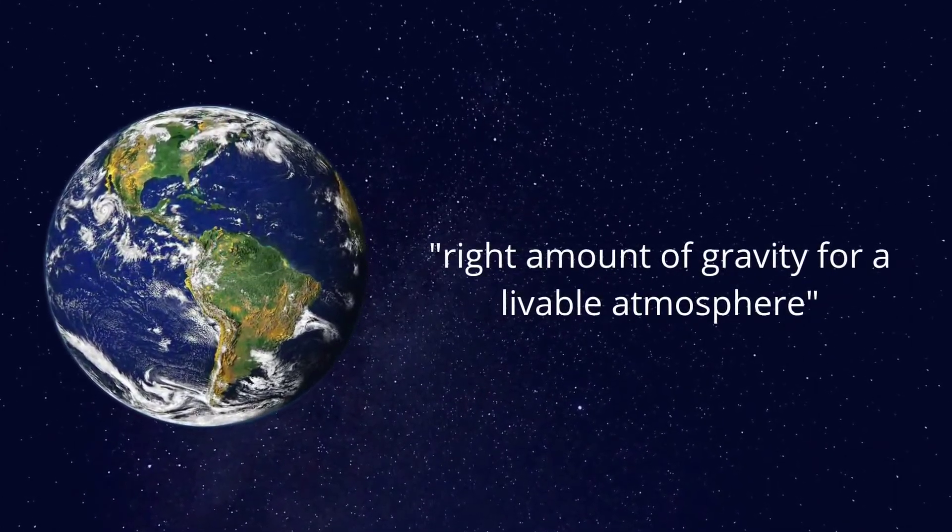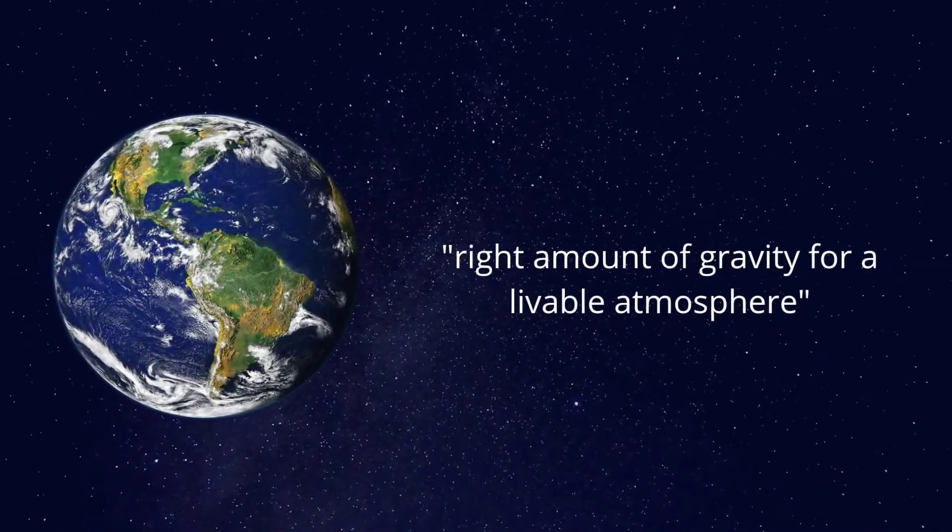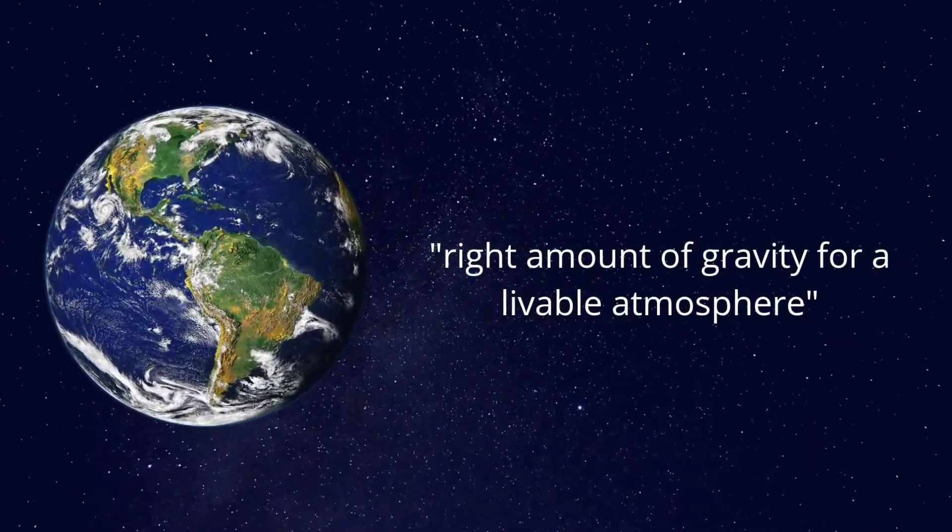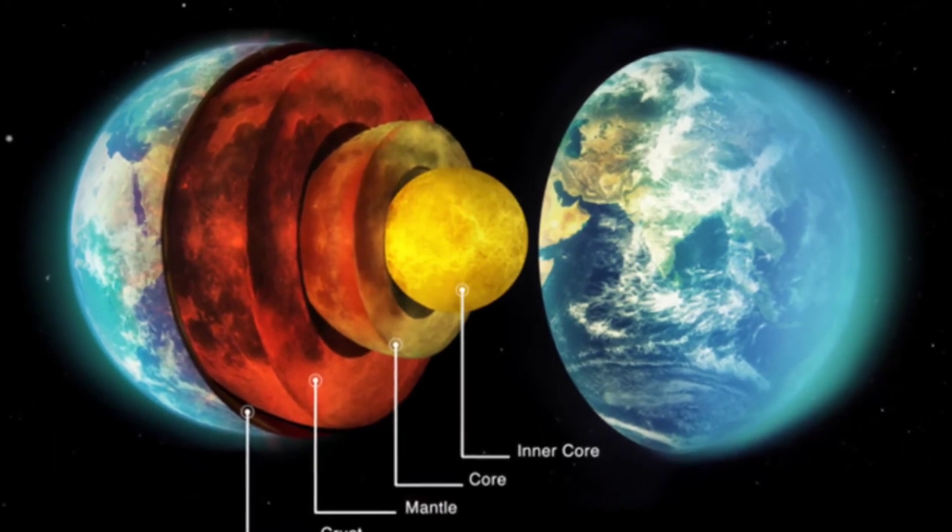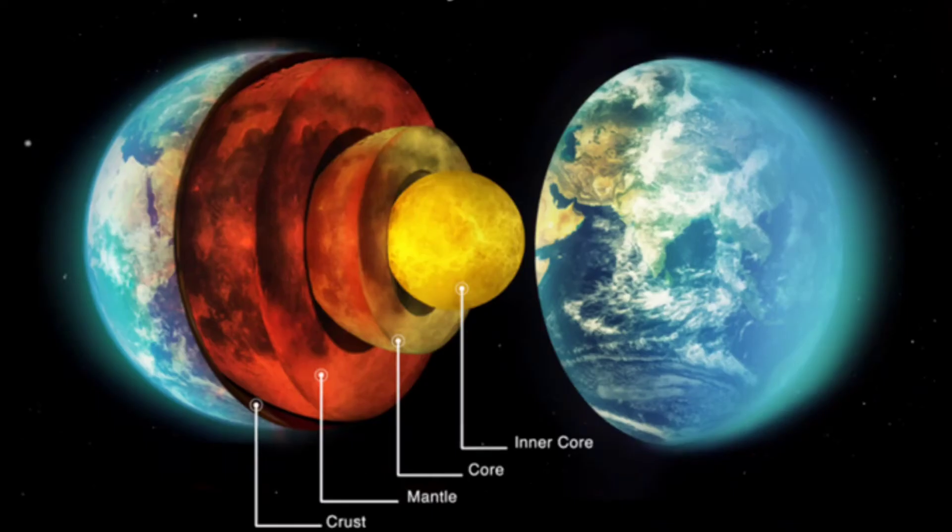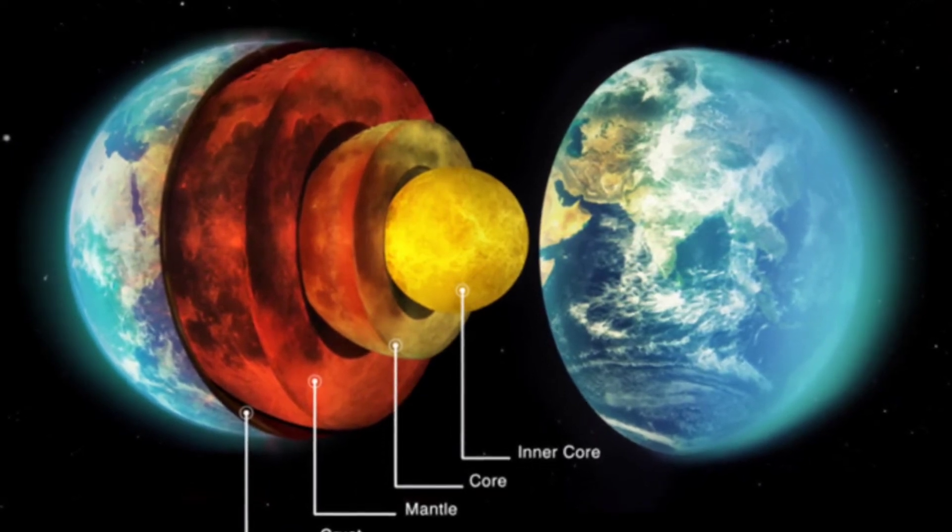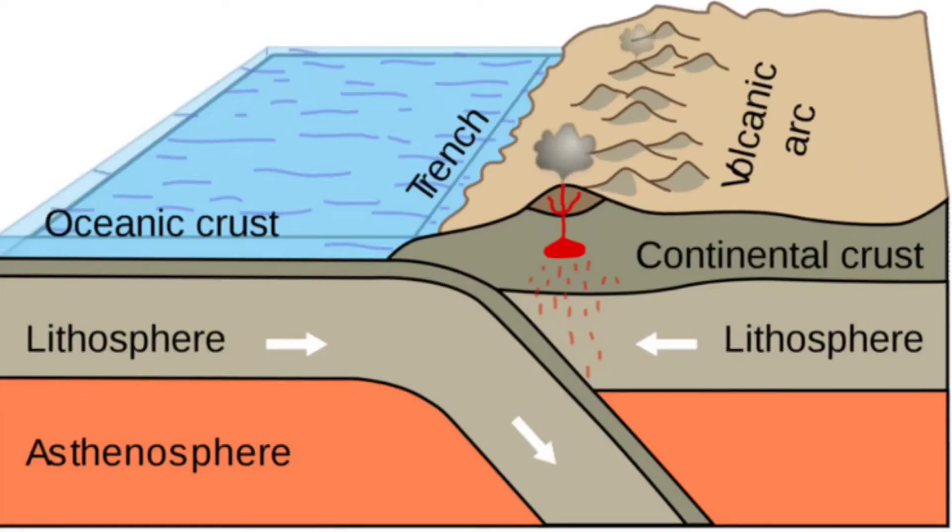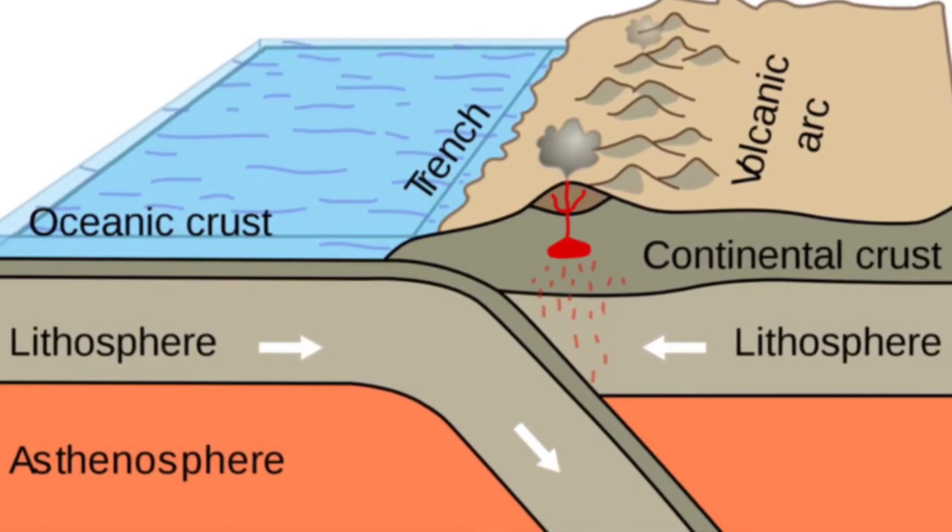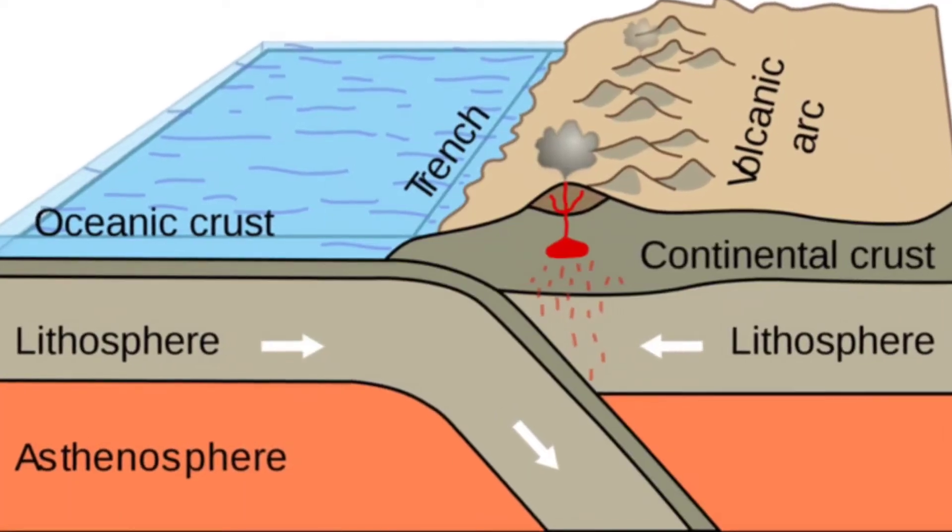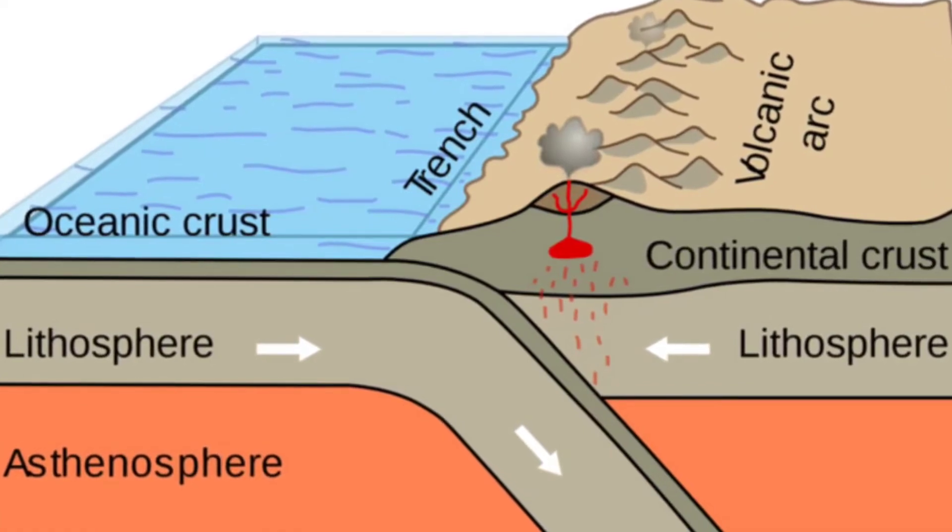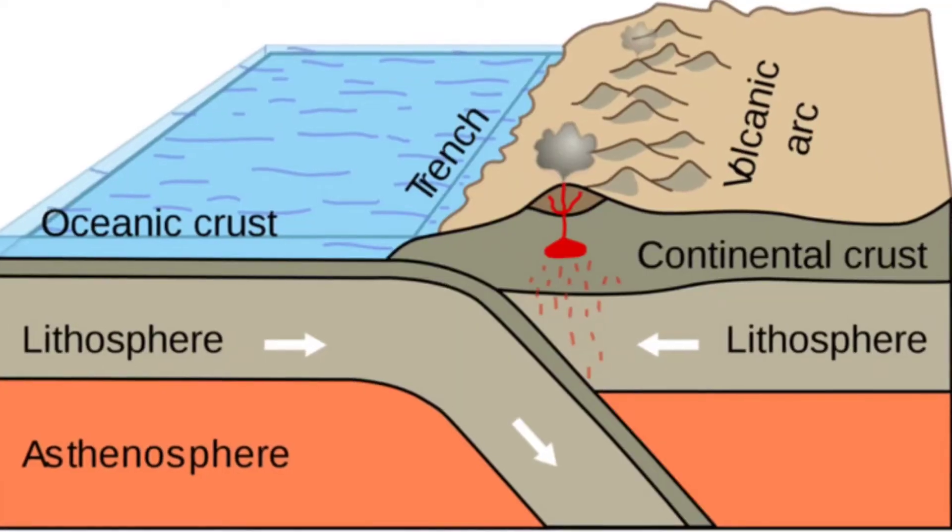Earth's interior design has a rigid lithosphere overlaying a weak asthenosphere, allowing plate tectonics to operate. As a result, continental crust or the highlands form. Without those highlands, Earth would have been entirely covered by an ocean a few kilometers deep.